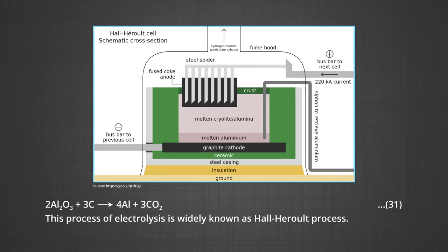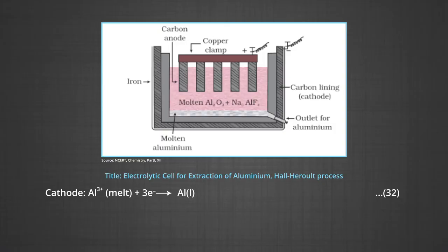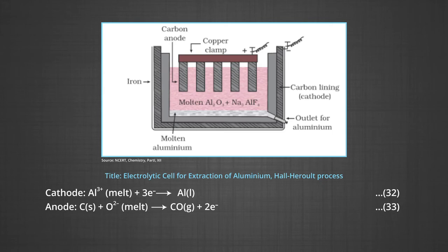This process of electrolysis is widely known as the Hall-Héroult process. The electrolysis of the molten mass is carried out in an electrolytic cell using carbon electrodes. The oxygen liberated at the anode reacts with the carbon of the anode, producing CO and CO₂. For each kilogram of aluminum produced, about 0.5 kg of carbon anode is burnt away. The electrolytic reactions are: at cathode — Al³⁺ ions from the melt combine with 3 electrons to give aluminum metal; at anode — C + O²⁻ → CO + 2e⁻, and C + 2O²⁻ → CO₂ + 4e⁻.